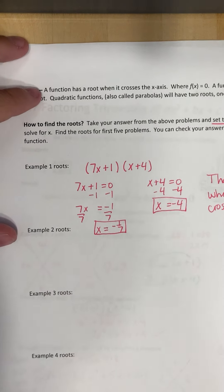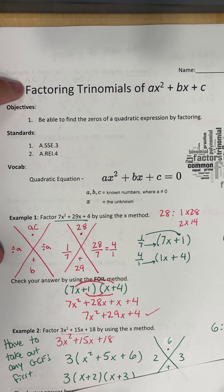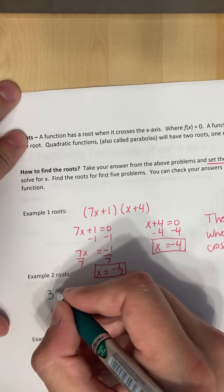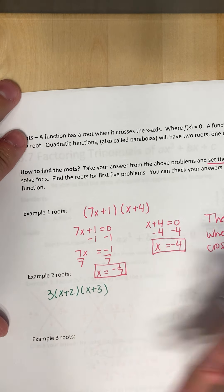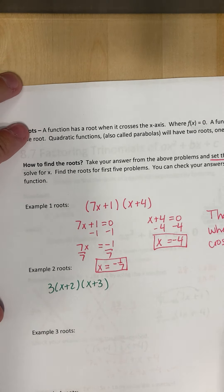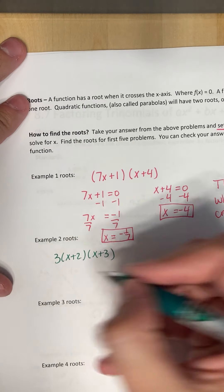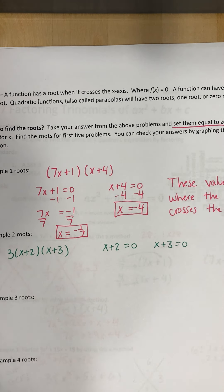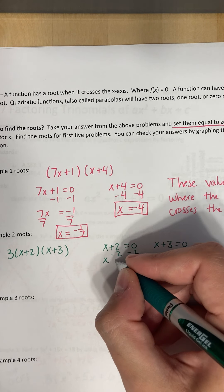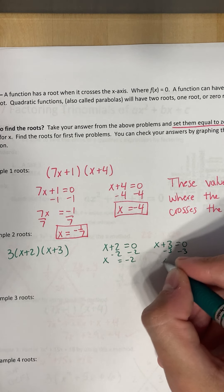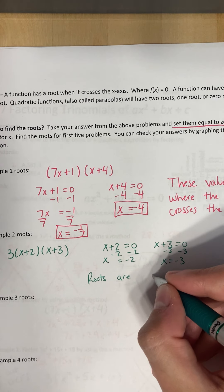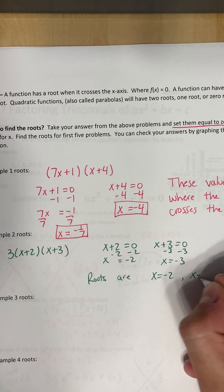So let's look at example two. Example two, we had the three x plus two x plus three. So let's do three x plus two x plus three. If you ever run into a case where you've got a random number on the outside, you can just ignore it to find the roots. So what we'll get is x plus two equals zero, and x plus three equals zero. So I'll subtract two, subtract two, x is going to be equal to negative two. I'll subtract three, subtract three, and x is equal to negative three. So our roots are x equals negative two, and x equals negative three.